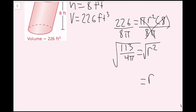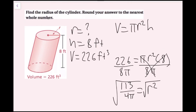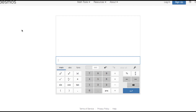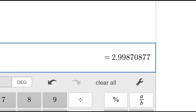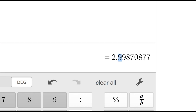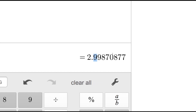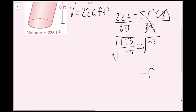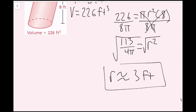So R equals the square root of 113 over 4 pi. Plugging this into the calculator gives 2.998. To round to the nearest whole number, the digit to the right of the whole number 2 is 9, so I round up to 3. My radius is approximately 3 feet, since the height and volume are both in feet and cubic feet respectively.